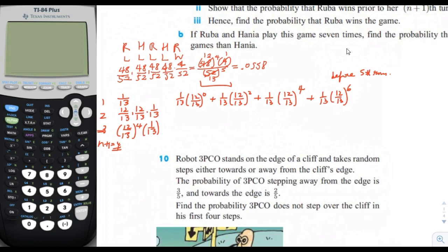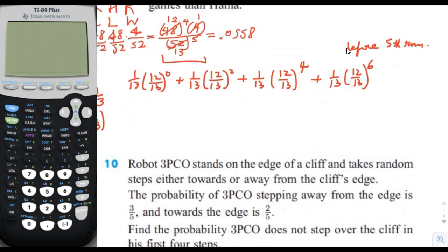Looking at the sequence with n equals 5 to see the pattern more clearly: this is a geometric series being added together. The u1 value is 1/13, present in every term. The r value is (12/13)^2, because each term is multiplied by (12/13)^2, and the exponent goes from 2 to 4 to 6.